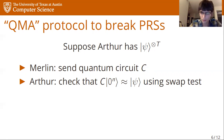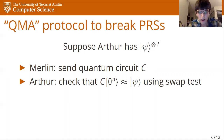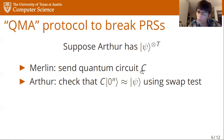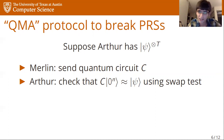You can become convinced that Psi at least has a short description, or that it does not if this protocol fails. Why does this break pseudorandom states? If the state is from the pseudorandom ensemble, there's always a short description by way of the efficient generating algorithm. By contrast, a counting argument shows that if Psi is a HAAR random state, no short description will even approximately produce a state close to Psi. Hence there is a QMA algorithm to break pseudorandom states.